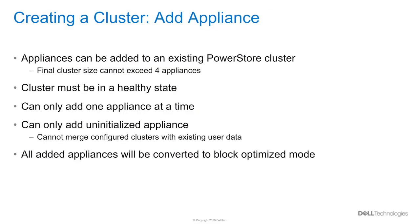The other way to create a multi-appliance cluster is to add an appliance to an existing already configured cluster. The same sizing rules are enforced, and you cannot exceed four appliances within a single cluster. The configured cluster must be in a healthy state to support adding any additional appliances. Only a single appliance can be added at a time. If you wish to add multiple appliances to an existing cluster, then you can perform that one at a time. Only uninitialized appliances can be added to a cluster — it is not possible to merge a cluster by adding an already configured appliance. Finally, all added appliances will be automatically converted to block-optimized deployment mode.